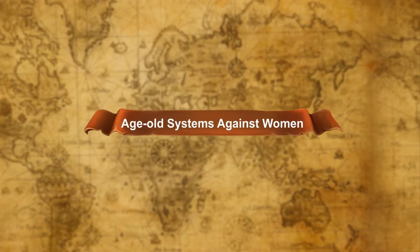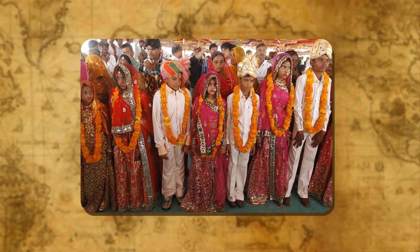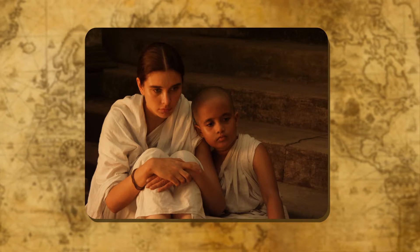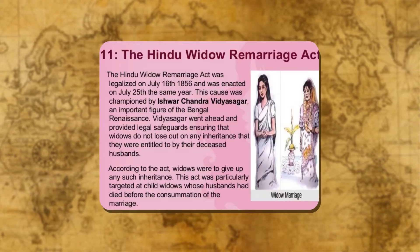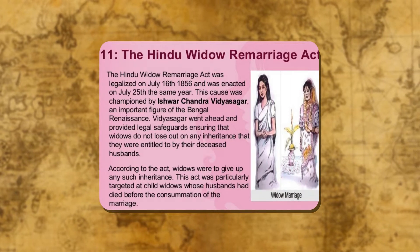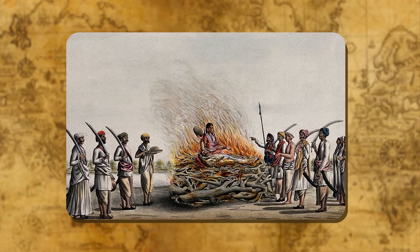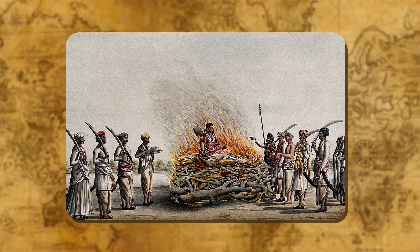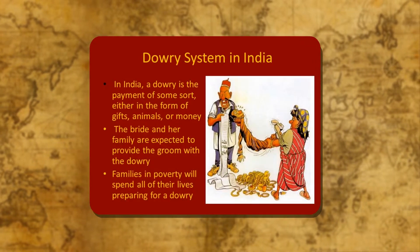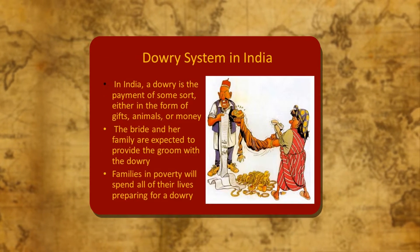Age-old systems against women: In Indian society, girls were married at a very young age. In case of early death of her husband, she had to suffer a long life of agony as a child widow. Widows were not permitted to remarry. They had to lead a life of utter neglect and despise. The custom of sati was regarded as the noblest virtue of a widow. Many a time, widows were forced to become sati against their wishes. The dowry system, still prevalent in society, forced many poor girls to remain unmarried.